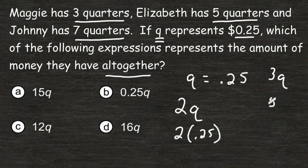It says that Elizabeth has 5 quarters, which would be 5 times Q, and Johnny has 7 quarters, which is 7 times Q.